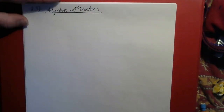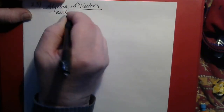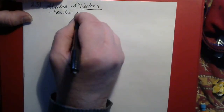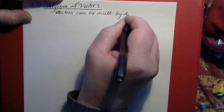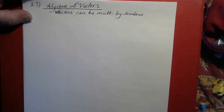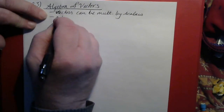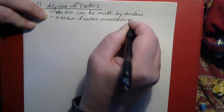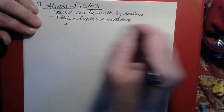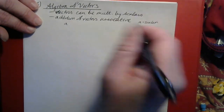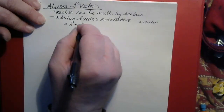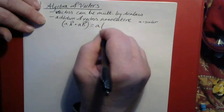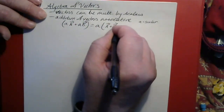Next we come to section 2.3 on the algebra of vectors. We know already that vectors can be multiplied by scalars. The addition of vectors is associative, meaning A times vector A plus A times vector B can also be written as A times the sum of vector A plus vector B.